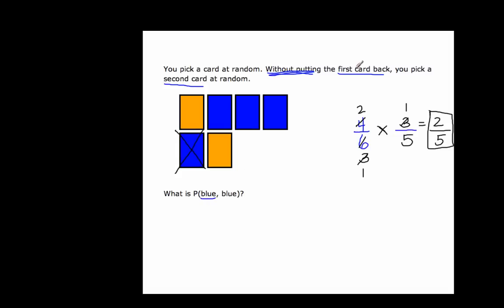Two-fifths is fully simplified because no factor other than one divides both two and five. The probability of picking a blue card first, without putting it back, and then picking a blue card again on the second try is a two out of five chance. The answer is not greater than one and is greater than zero, so it is within the valid range for probability.